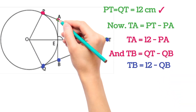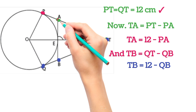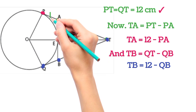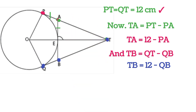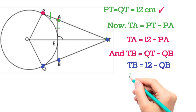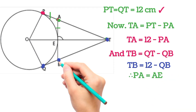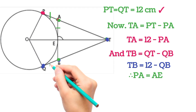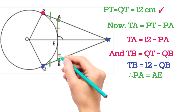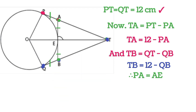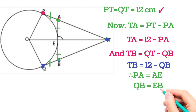From point A, two tangents are drawn: PA and AE, so PA = AE. Similarly, from point B, two tangents are drawn on the circle: QB and EB, so QB = EB.